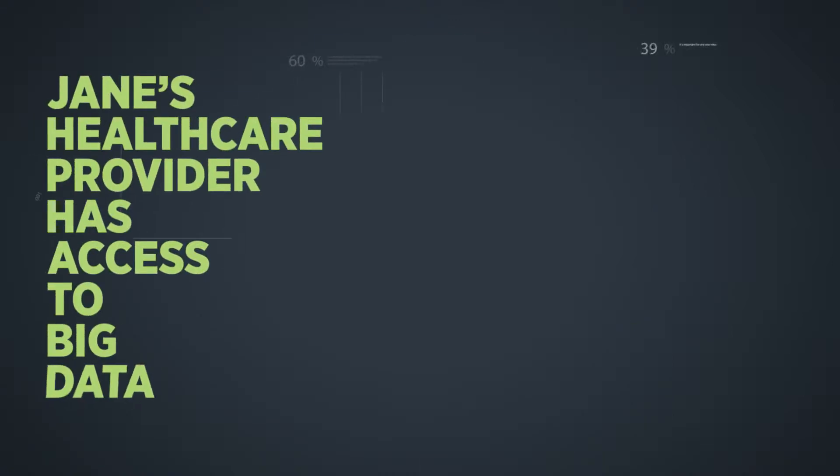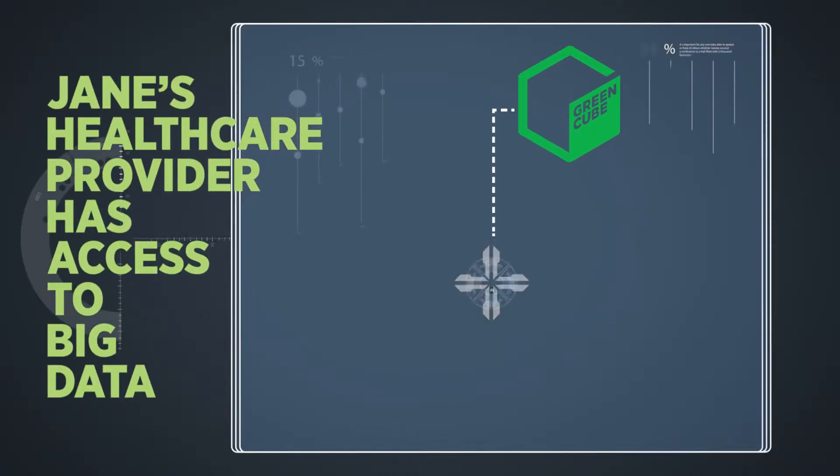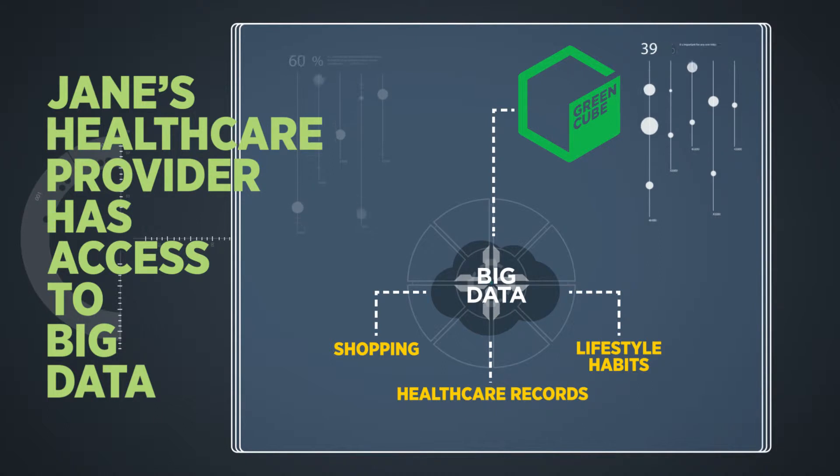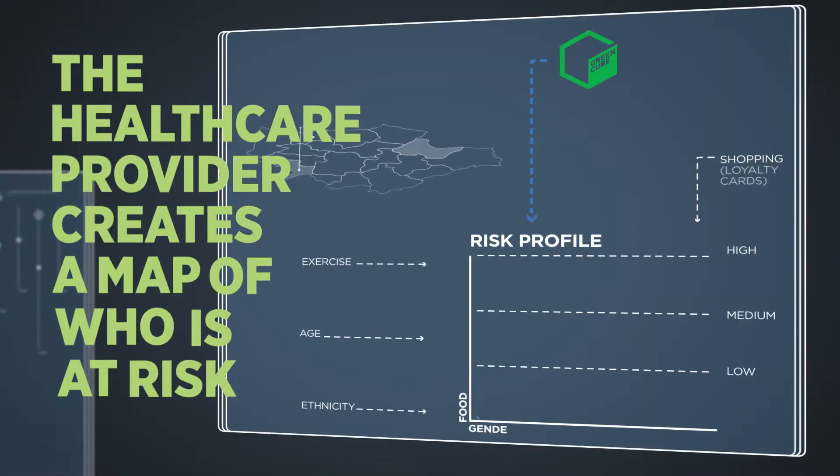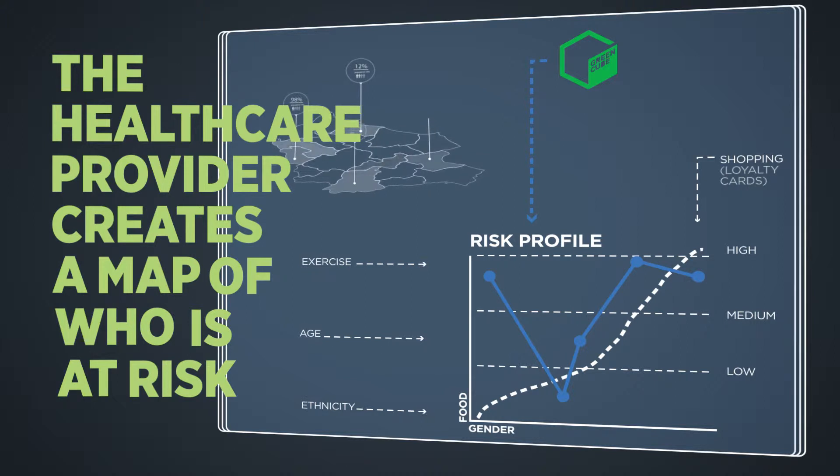Our health provider, Green Cube, had access to something called Big Data. Anonymous data collected about lifestyle habits, shopping habits, all those sorts of things. It gives my health provider a kind of map of who's at risk the most. It turns out I was targeted in the state of being in the at risk zone.